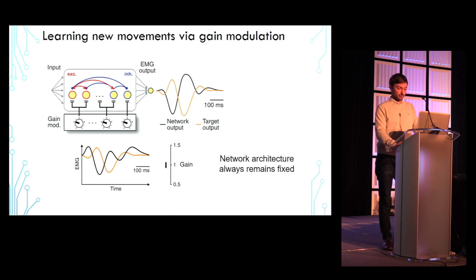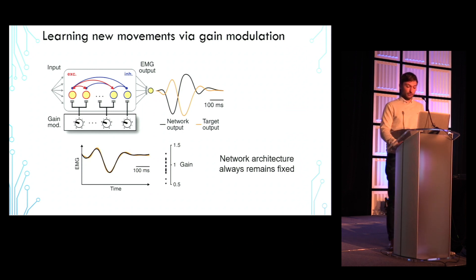And we can see that after some time, the network output in black begins to resemble the target movement in orange, and the gains have changed for all of the modulatory units.